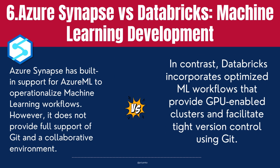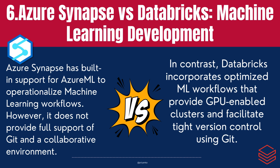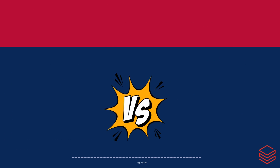The last difference is in machine learning development. Azure Synapse has built-in support for Azure ML to operationalize machine learning workflows. However, it does not provide full support of Git and a collaborative environment. In contrast, Databricks incorporates optimized ML workflows that provide GPU-enabled clusters and facilitate tight version control using Git.